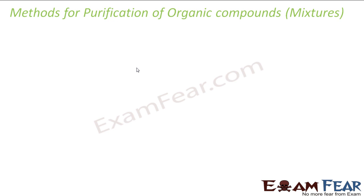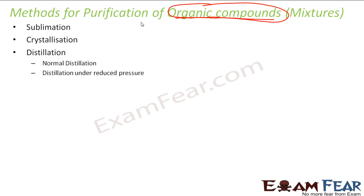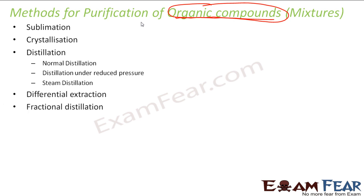In this chapter I will talk about various methods of purification of organic compounds. I'll have mixtures of organic compounds that are not chemically joined and I'll try to separate them. The methods we'll study are: sublimation, crystallization, distillation (including normal distillation, distillation under reduced pressure, and steam distillation), differential extraction, fractional distillation, and chromatography.